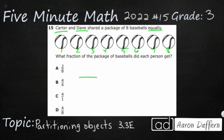Let's take a look at what each of these terms are called. When we get a top number on a fraction it's called a numerator, and when we get the bottom number it's called a denominator. Very long words, but they refer to specific parts of a fraction.